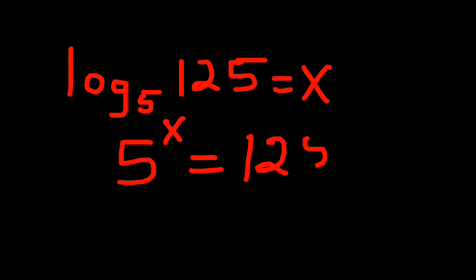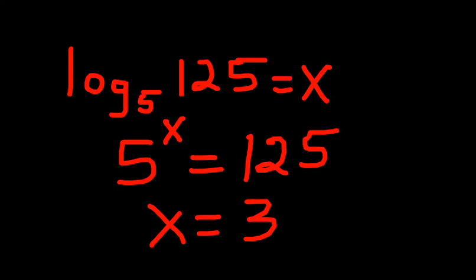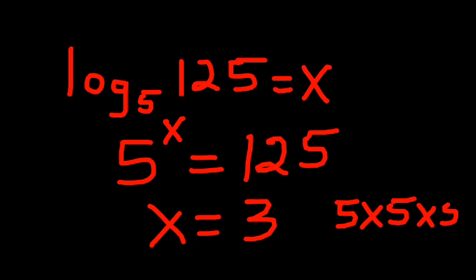In this first type of problem, the missing x is the exponent in the exponential equation, and we have to ask ourselves: 5 to what power is equal to 125? The answer is x equals 3, because 5 times 5 is 25, times 5 is 125. So x equals 3 is our answer.